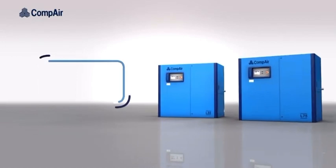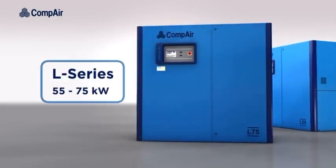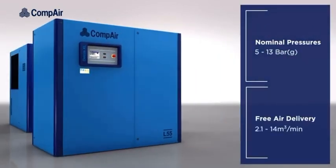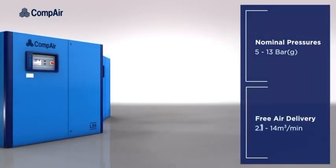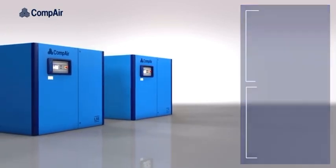Introducing CompAir's next generation 55 to 75 kilowatt L series with nominal gauge pressures from 5 to 13 bar and free air delivery of between 2.1 and 14 cubic meters per minute. The 55 to 75 kilowatt range delivers performance that defies its compact dimensions.